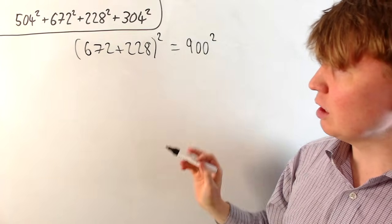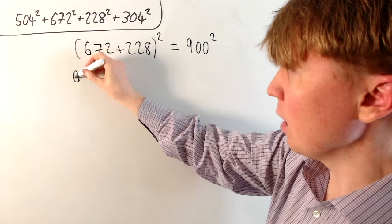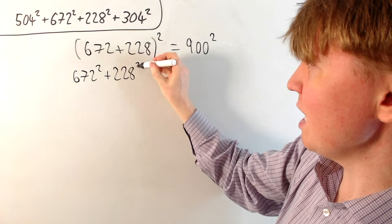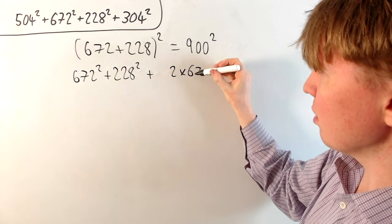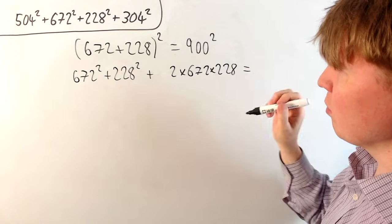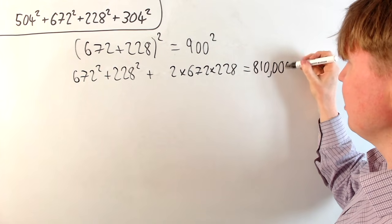Instead of actually calculating this, we could treat this algebraically, so expand the bracket. So we would get 672 squared plus 228 squared. Then we'd also have plus 2 times 672 times 228. This is equal to 900 squared. And we could calculate that really easily. It's 810,000.